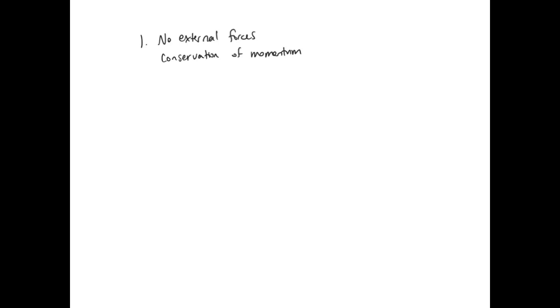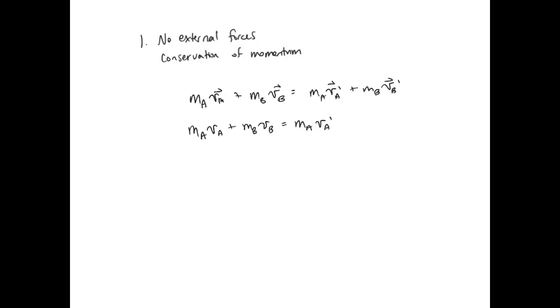The first thing is we have no external forces. Because there are no external forces, we have conservation of momentum. So in this case with two particles, I can say M_A V_A plus M_B V_B is equal to M_A V_A prime plus M_B V_B prime. This will be the first equation that we use to solve these questions.